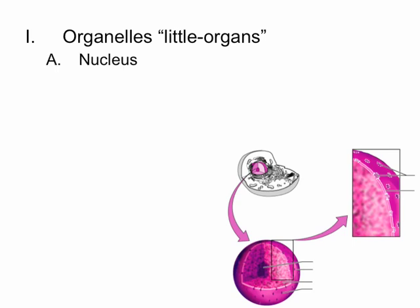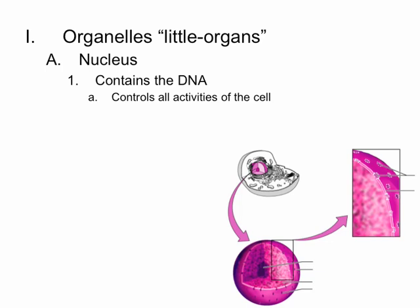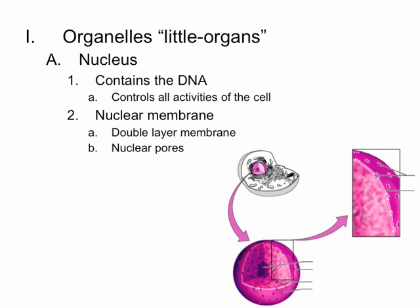The first organelle we're going to look at is the nucleus. The nucleus contains the DNA of the cell. DNA then controls all activities and metabolic processes that take place inside of that cell. The nucleus is surrounded by a nuclear membrane — a double layer membrane similar to what you see in the plasma membrane. However, it does have some structures called nuclear pores.